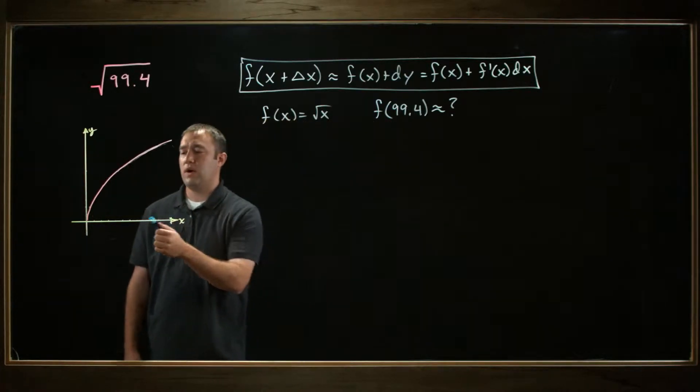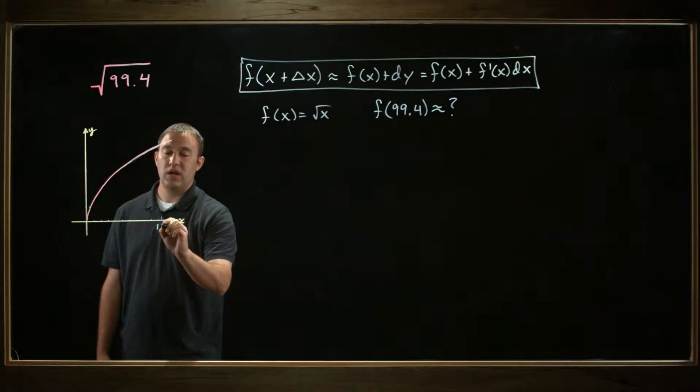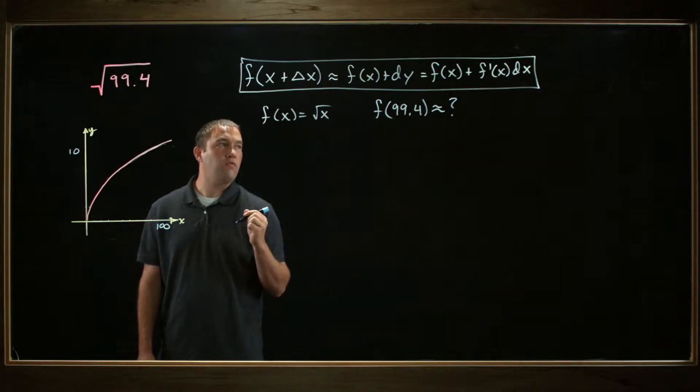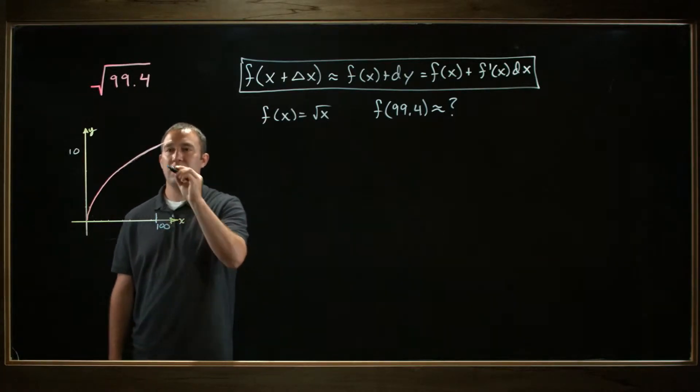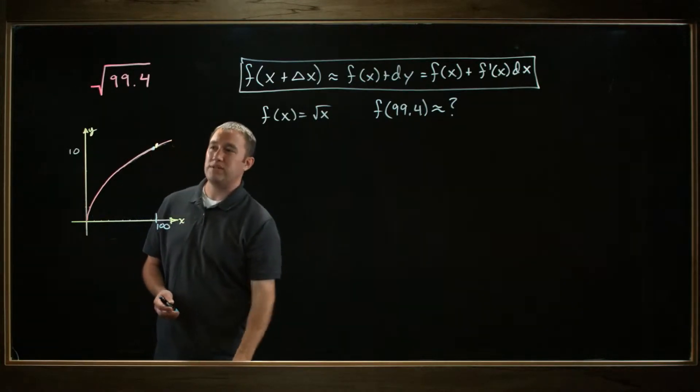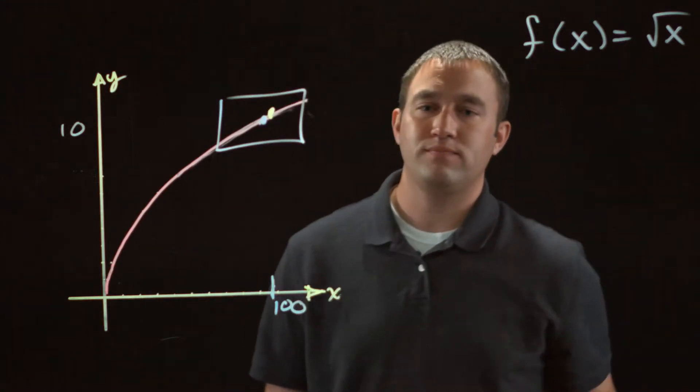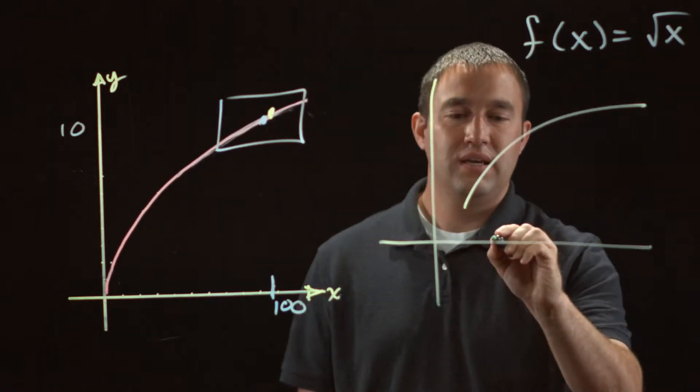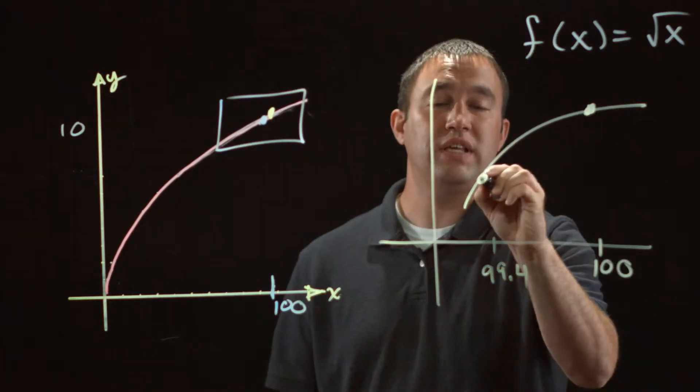I've got a rough sketch of square root of x right here. On this scale, I've shortened the x scale so that here's 100 and here's 10. I want to know where 99.4 falls on that. Well, 99.4 falls right here, really close to 100, and it falls right about here. The difference between those two points is really, really small on this scale.